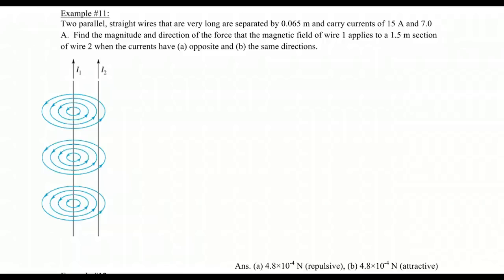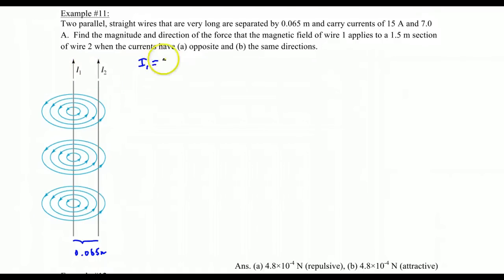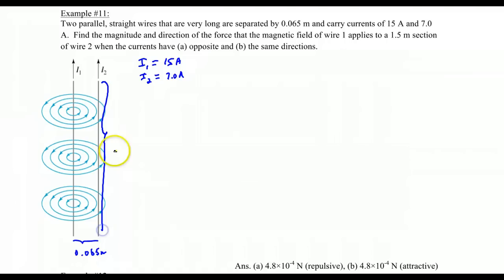Welcome to example number 11. We have a situation where we have two parallel straight wires, very long. They're separated by a distance of 0.065 meters. The first wire has a current I1 of 15 amps and the second wire I2 is 7 amps. We're also told that we're looking at a length of this wire of 1.5 meters.